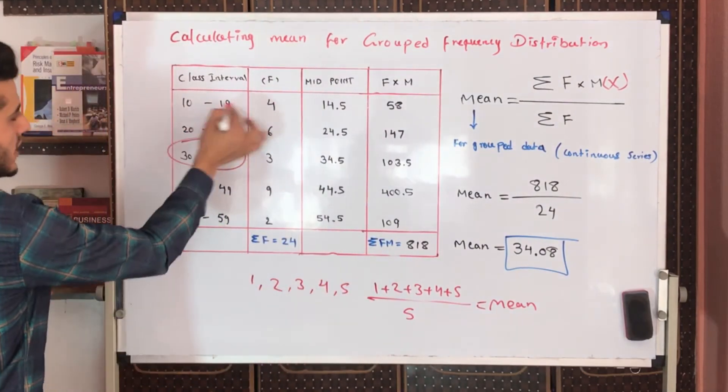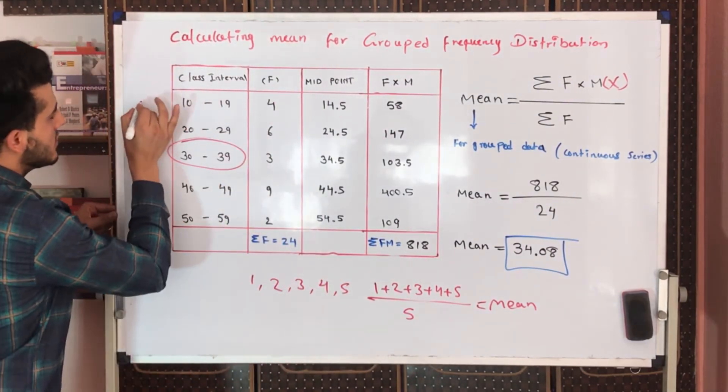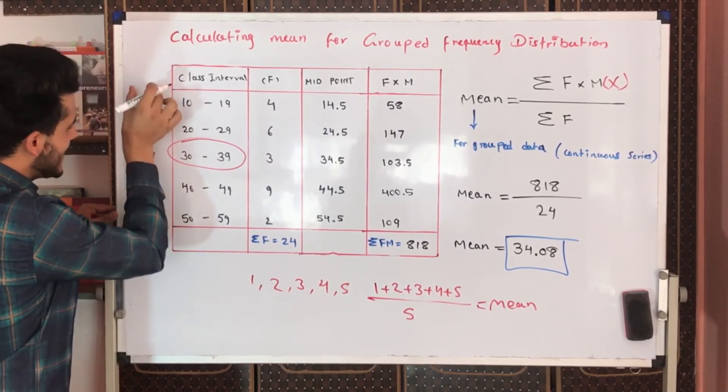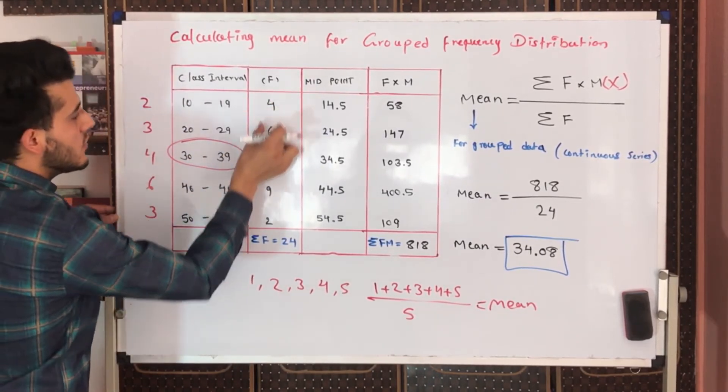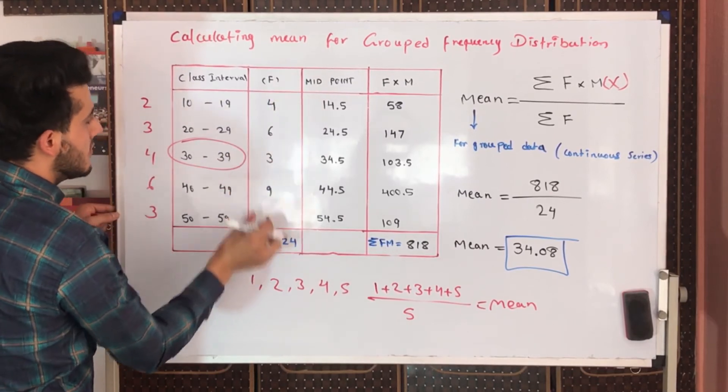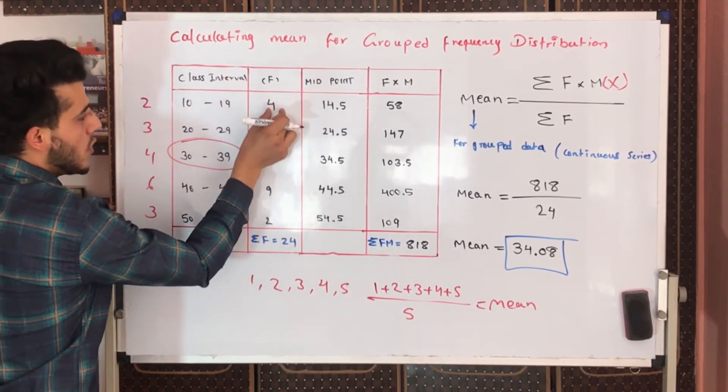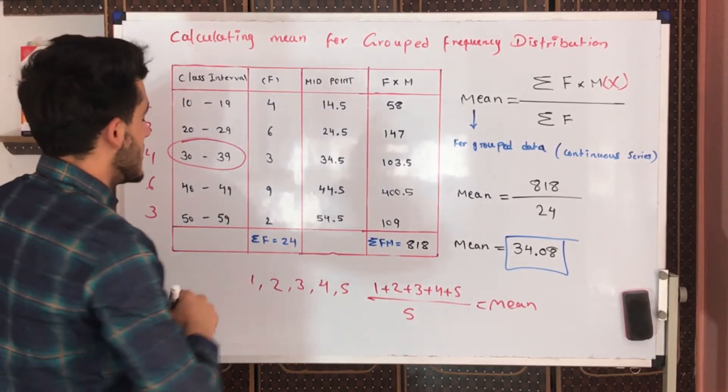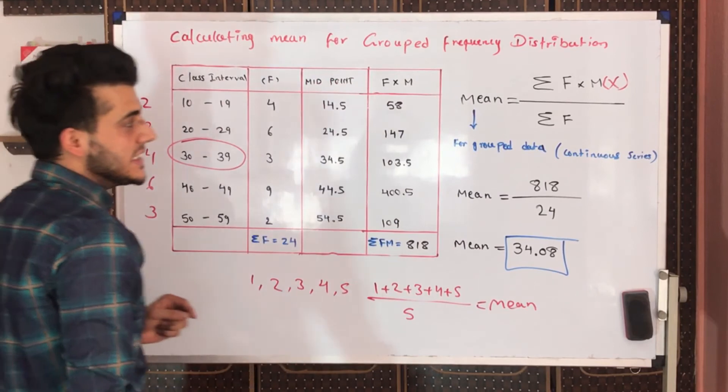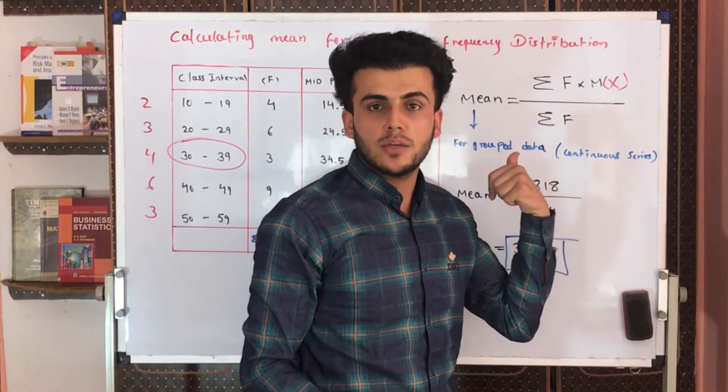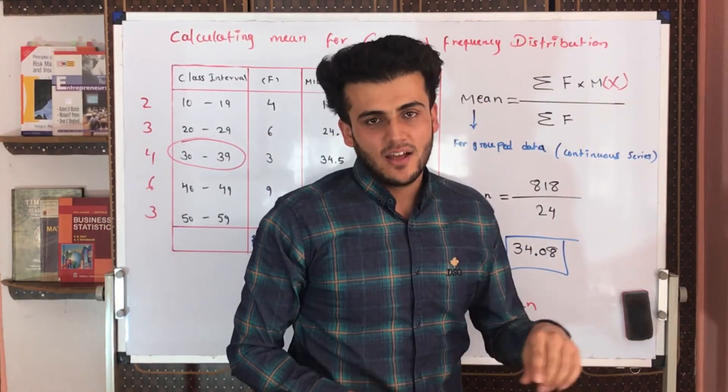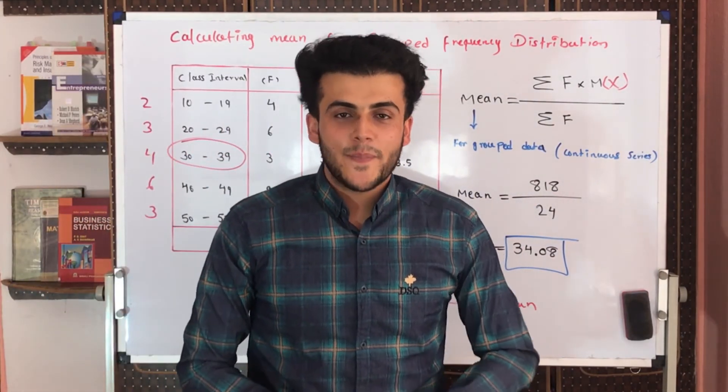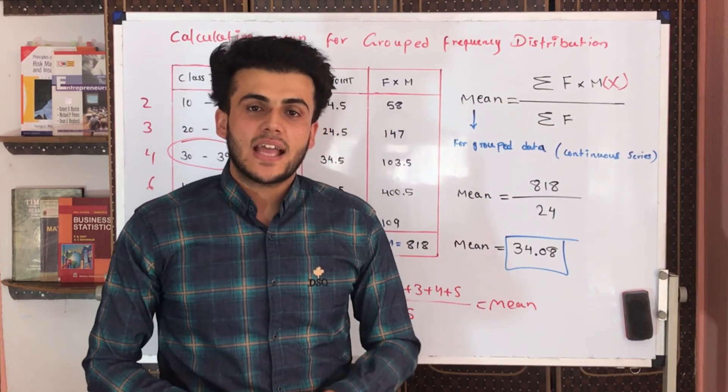As already they have given us the exact x observation number, there is no class interval. They may give us 2, 3, 4, 6, 3, and their frequencies are 4, 6, 3, 9. It means that 2 has been repeated four times, 3 has been repeated six times. The formula would be changed because we do not need any midpoint anymore - only we need x, and x is given.